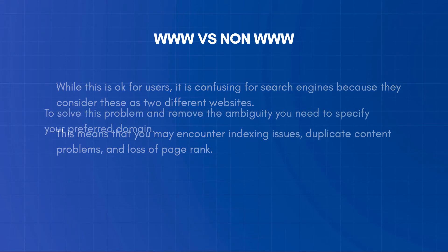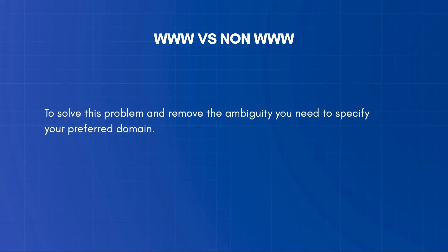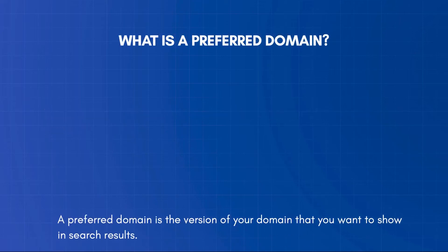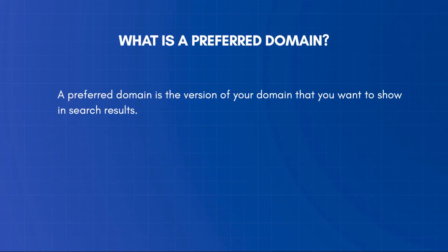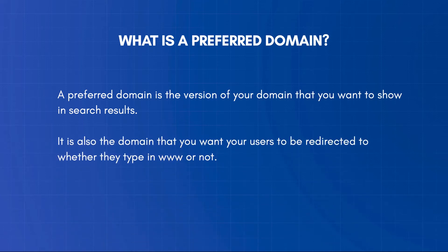To solve this problem and remove the ambiguity, you need to specify your preferred domain. In simple terms, a preferred domain is the version of your domain that you want to show in search results. It is also the domain that you want your users to be redirected to, whether they type in www or not.